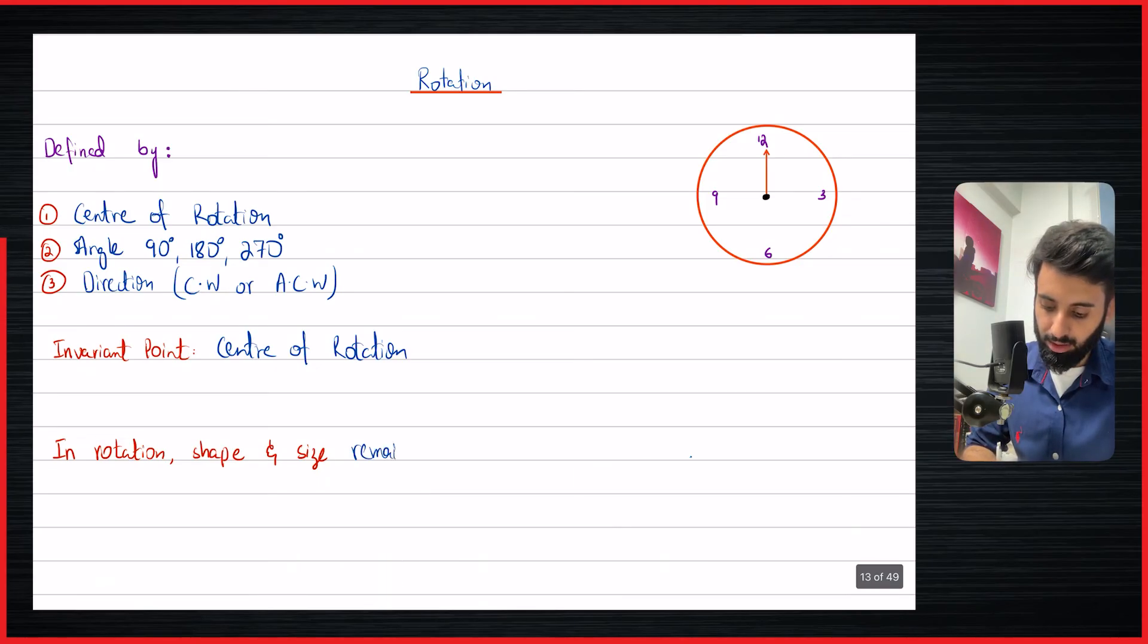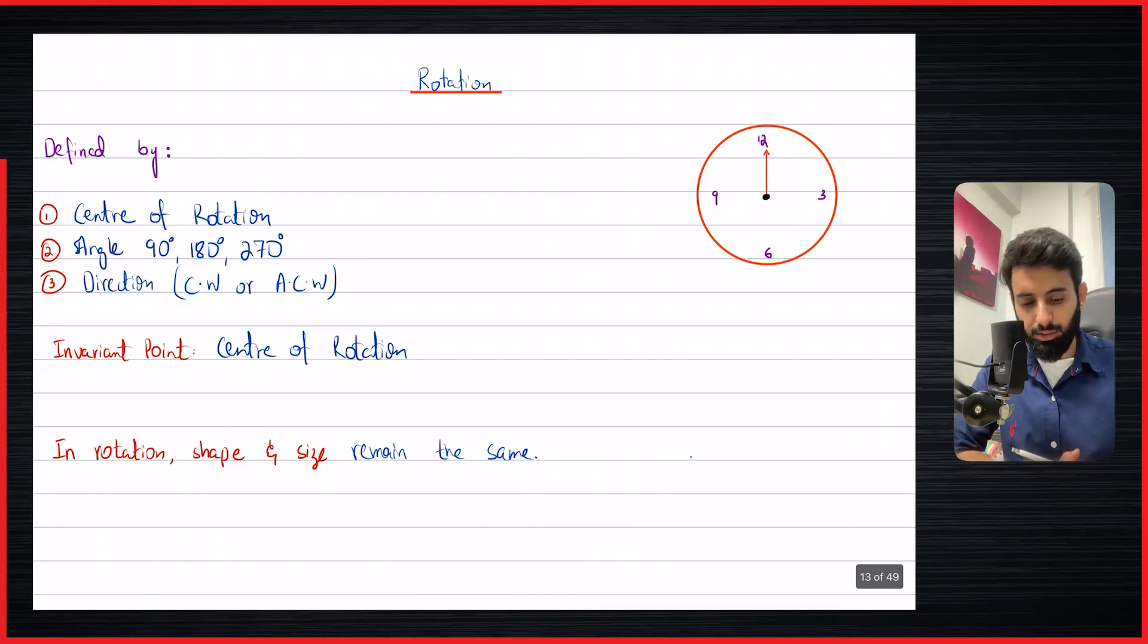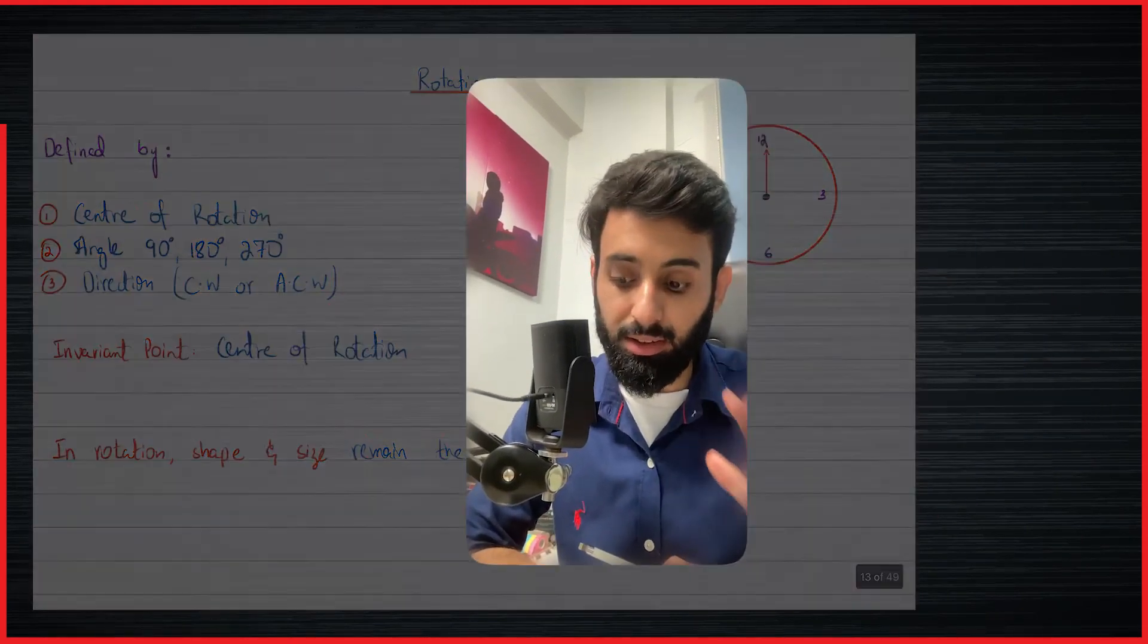This was just a quick introduction to rotation. I hope you've understood everything so far - not that I've explained some hardcore concepts over here, but these are the things to keep in mind whenever we're rotating an object. In the next couple of videos we'll start rotating points. We'll start from easier ones and then gradually increase the difficulty level. That's it for this video, I'll see you guys in the next one. Until then, take care, bye.